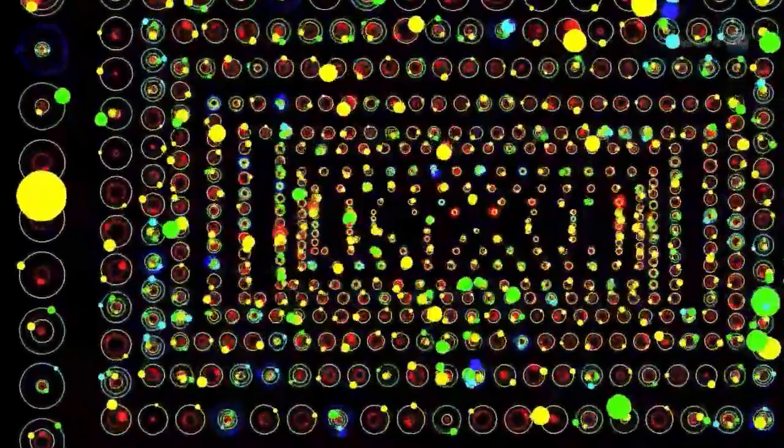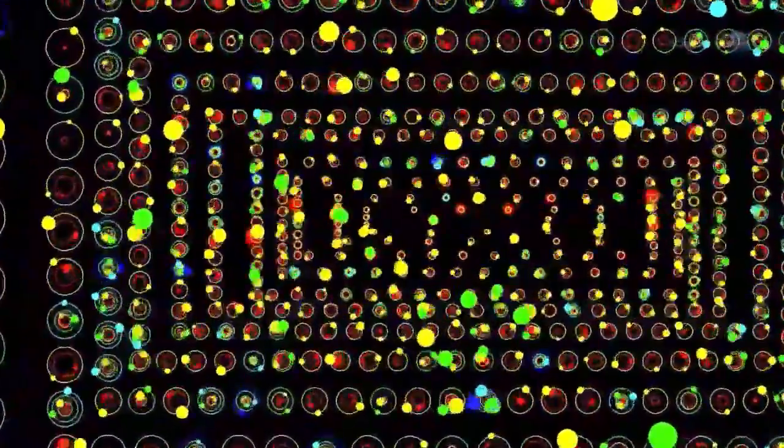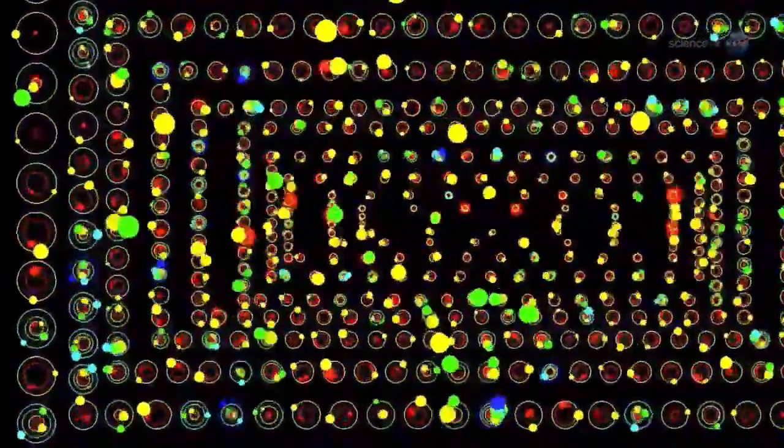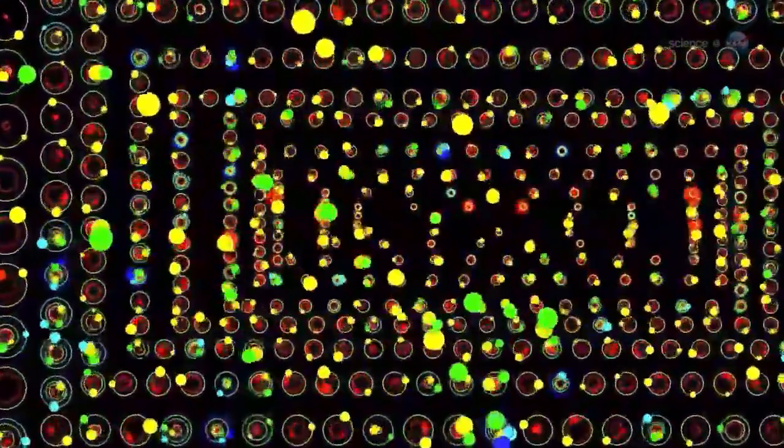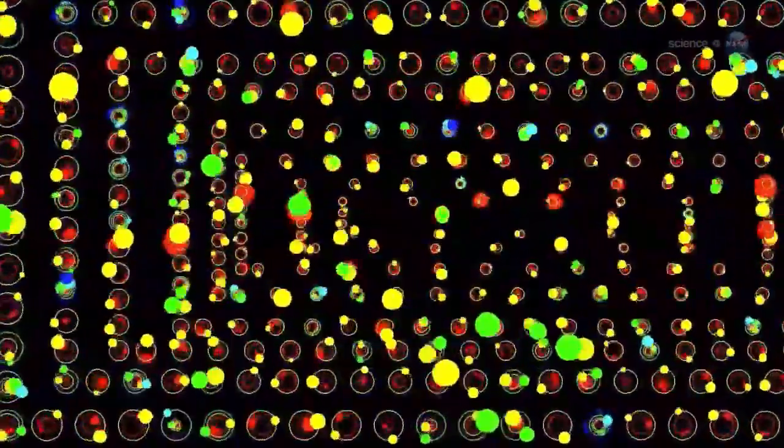All of the newly discovered worlds are located in multi-planet systems. Nearly 95% of the planets are smaller than Neptune, that is, less than four times the size of Earth. This is a marked increase in the known number of relatively small planets.